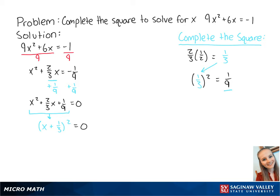Since the binomial is equal to 0, we now have x plus 1 third equals 0. When we subtract 1 third from both sides of the equation, we get x equals negative 1 third. And this is the final answer.